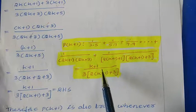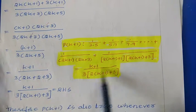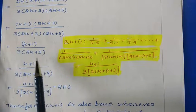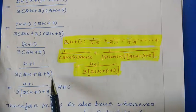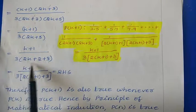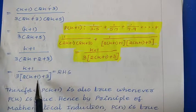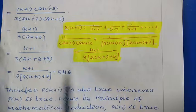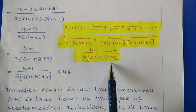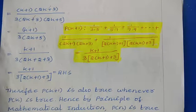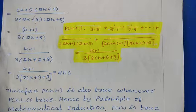We have k+1 in the numerator. Writing 2k+5 as 2k+2+3, and taking 2 out: 2(k+1)+3. So this becomes (k+1)/(3(2(k+1)+3)), which is our RHS. So P(k+1) is true whenever P(k) is true. Hence, by the Principle of Mathematical Induction, the given statement is true for all natural numbers.